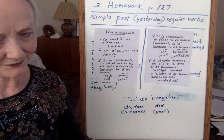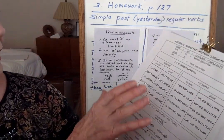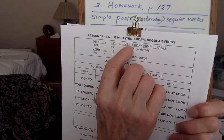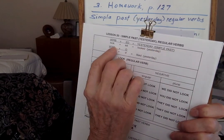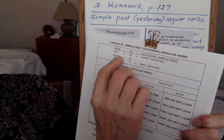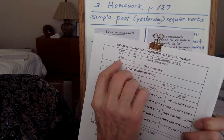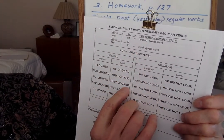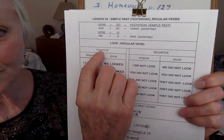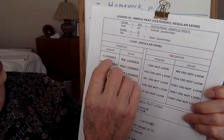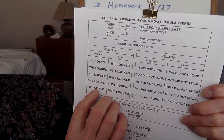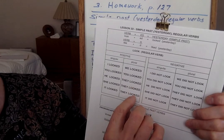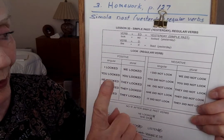Let's look at our work. Here you have verb plus -ed — that's your simple past. 'Looked'. Here you have verb plus -d, like 'like' plus D: 'liked'. Now notice — here's your positive, positivo: I looked, you looked, he looked, she looked, it looked — mismo — singular. We looked, you looked, they looked — solamente una palabra.